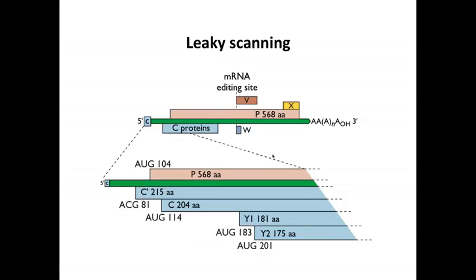Just to show how remarkable this mRNA is, there is another protein made by editing at one site. Post-transcriptionally, bases are added to the mRNA, which changes the reading frame upon translation, giving a different P-protein variant that terminates at a different position. So you get the P-protein, which shifts to a different reading frame past the editing site, then terminates. This is one way to take it to the extreme — making many proteins from a single mRNA, laughing in the face of the monocistronic rule.